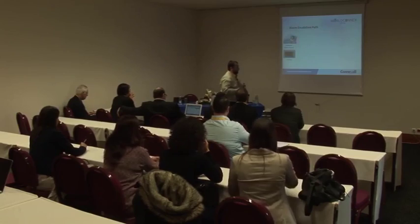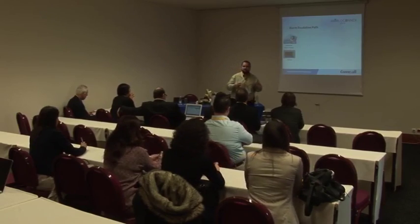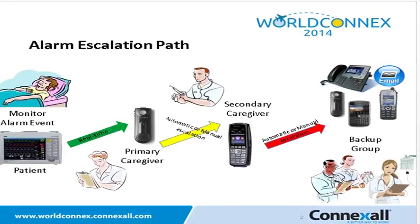We're going to start with the alarm escalation path and how assignments fit into that. When there is an alert or event triggered at the bedside, it immediately goes to what we call the primary caregiver. If the primary caregiver does not have a chance to attend to the patient, is busy on the phone, or is in an area with no coverage, the system should automatically — after a predetermined amount of time — escalate that notification to a secondary caregiver.